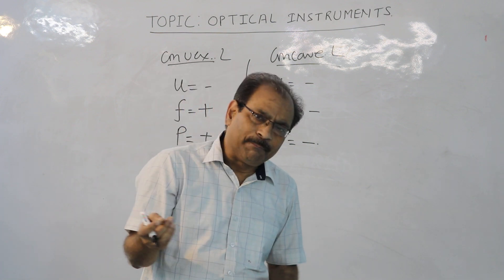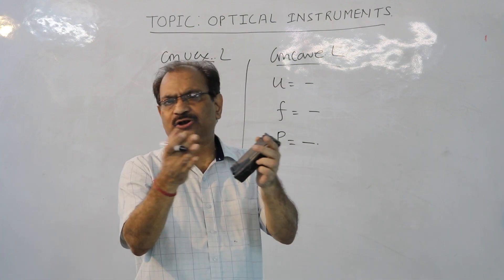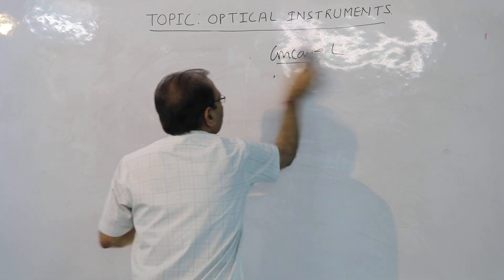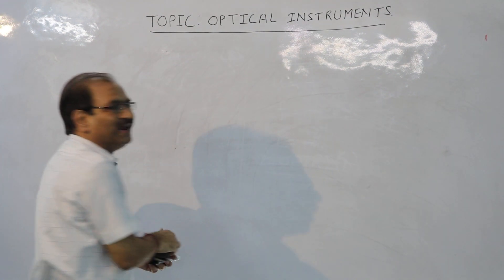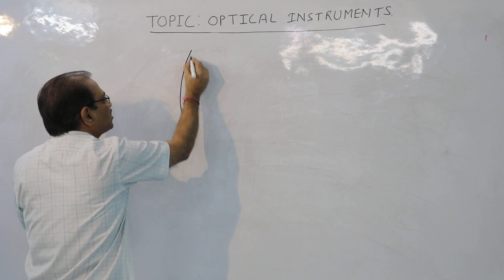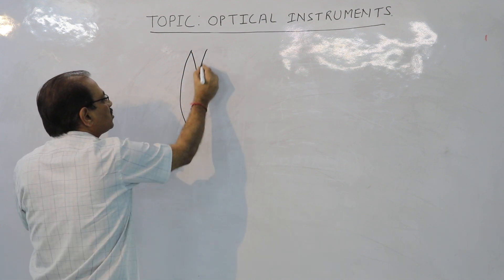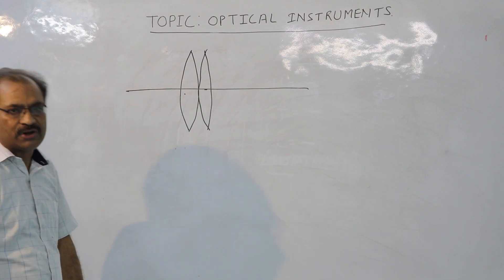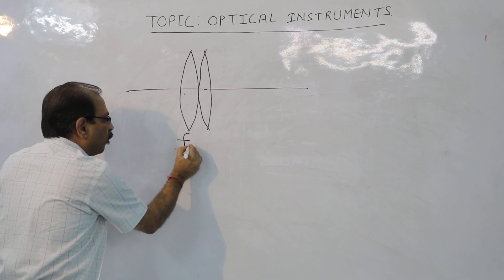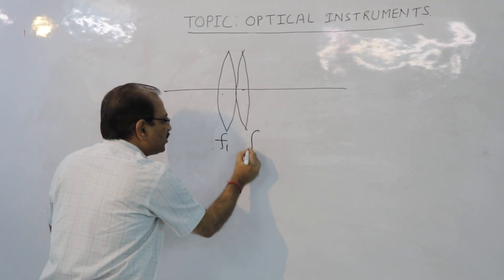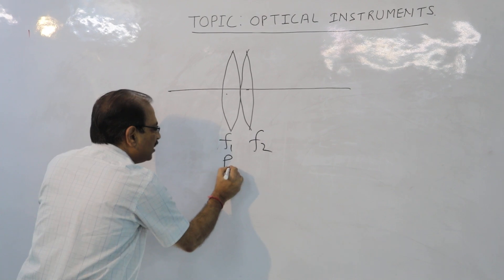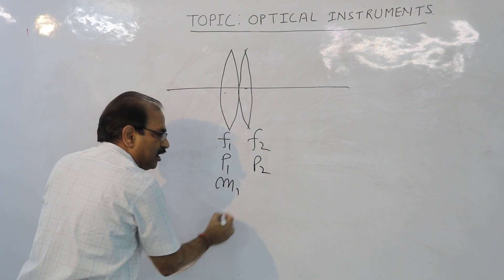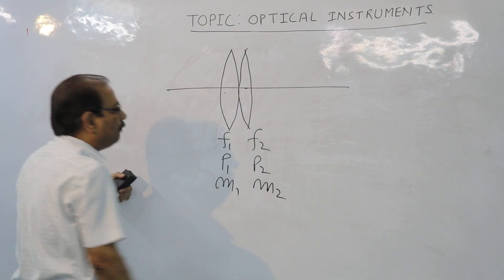Next, what happens if you are given a combination of lenses? For the sake of simplicity, consider two lenses: lens number one and lens number two. I am keeping these two convex lenses in contact with each other. The focal length of the first lens is f1, the second lens is f2. The power of the first lens is p1, the power of the second lens is p2, its magnification is m1, and the magnification of the second lens is m2.